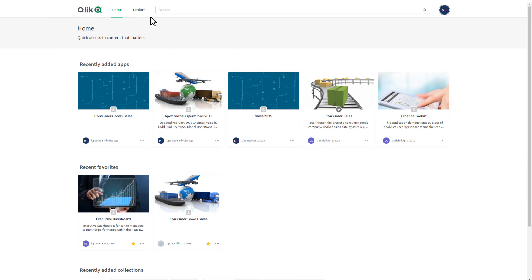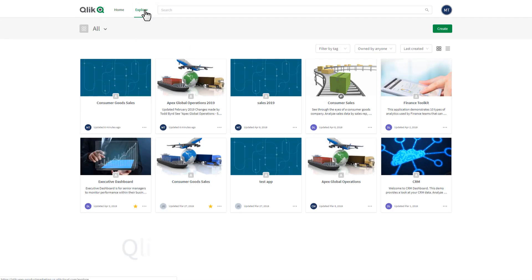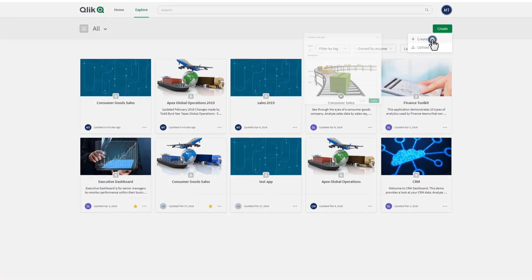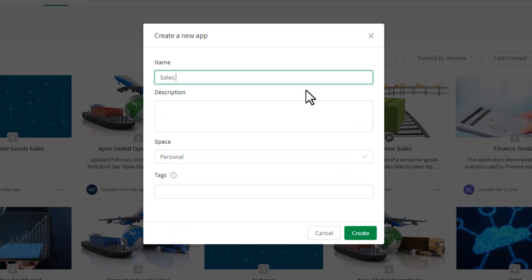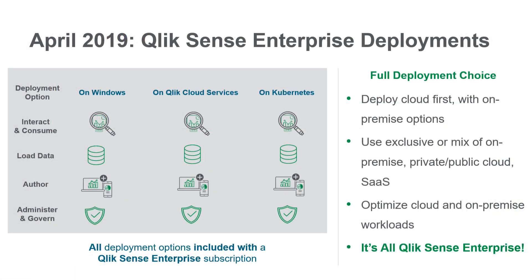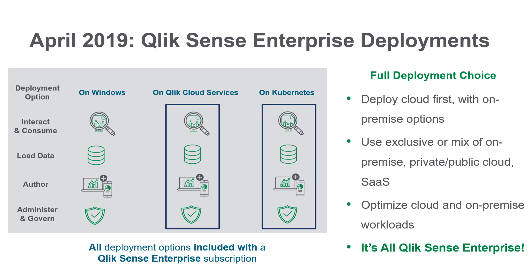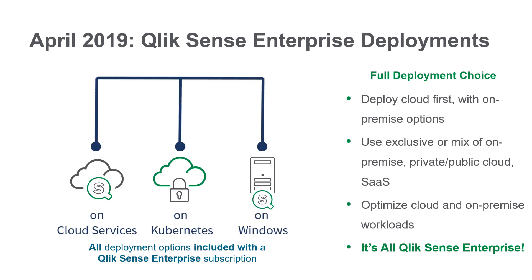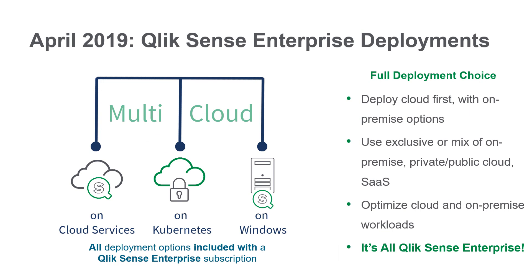With the Qlik Sense April 2019 release, we are excited to announce new enhancements to our multi-cloud deployment options, including the ability to create, reload, and consume apps entirely in Qlik's SaaS environment, Qlik Cloud Services. You can now deliver Qlik Sense Enterprise entirely on Qlik Cloud Services or on Kubernetes environments in the cloud of your choice. All deployment options also work together as part of a multi-cloud infrastructure, giving you flexibility to change your deployment model over time while leveraging the scalability of the cloud.